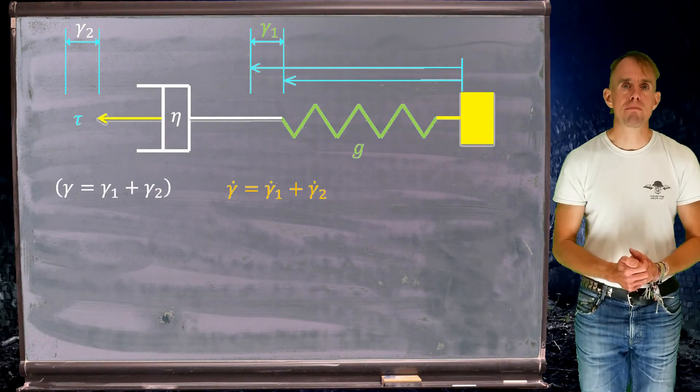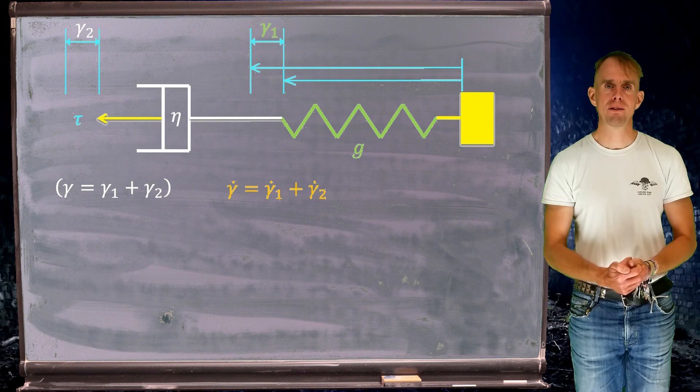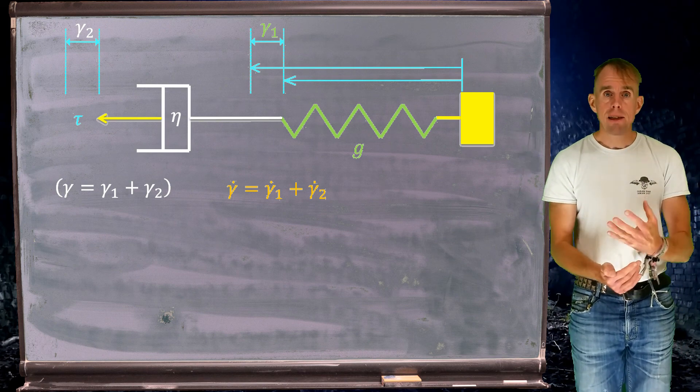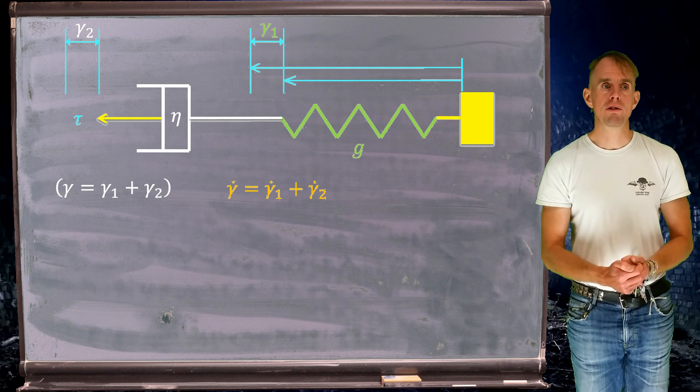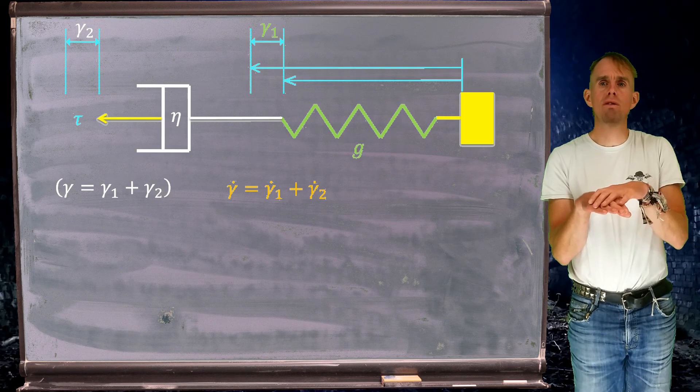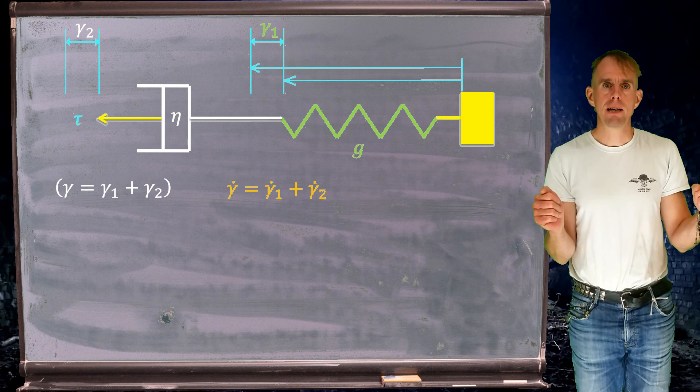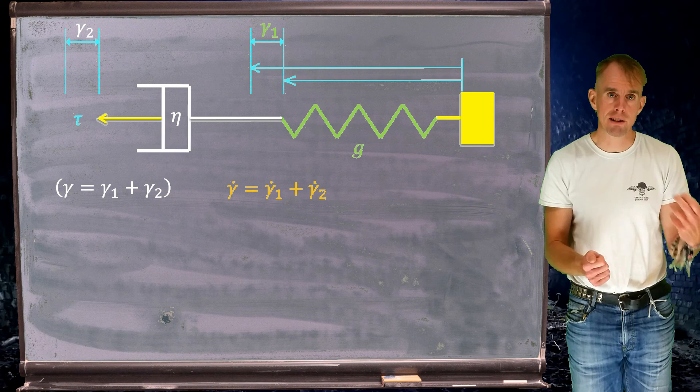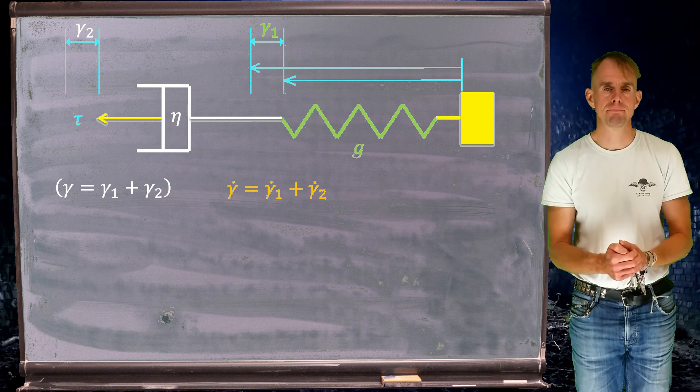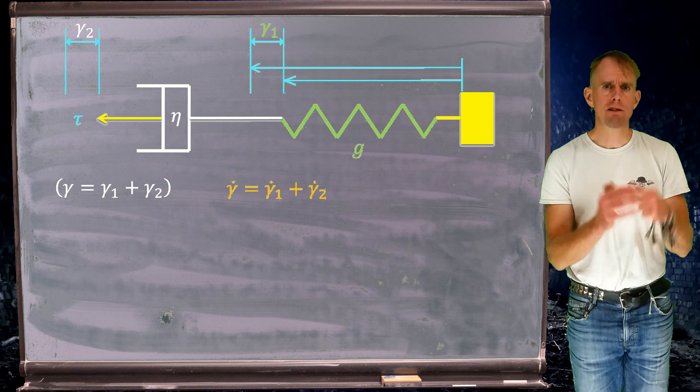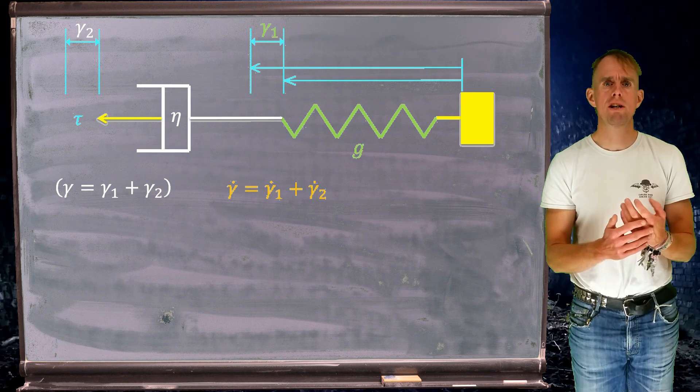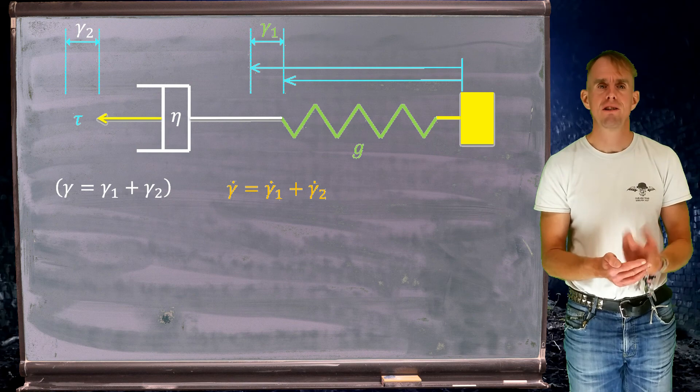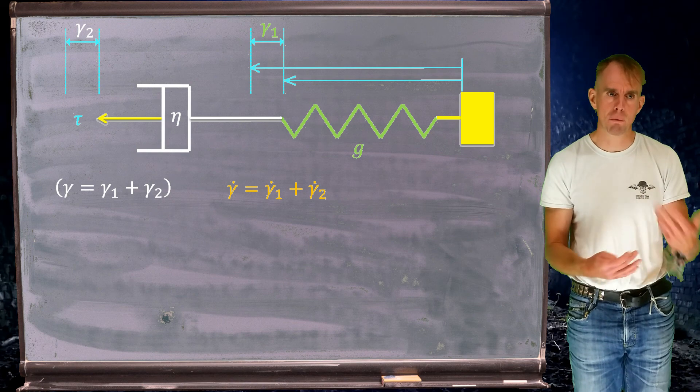Let's start by reminding ourselves what the Maxwell element looks like. Here on the blackboard is our Maxwell element. The key thing we acknowledged in the last part of this lecture was that the strain of the overall element, gamma, is the sum of the strain of the individual parts: the dashpot and the spring. If that's true, we can also say that the strain rate of the element, gamma dot, equals the sum of the strain rates of the individual parts, gamma dot 1 plus gamma dot 2.